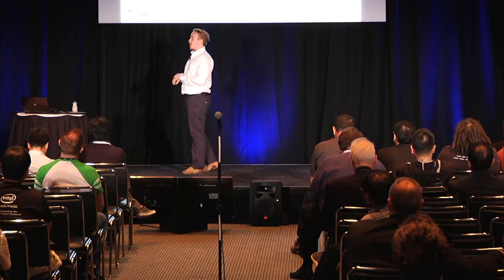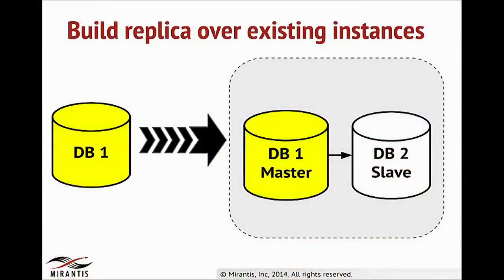The first use case defined by the community is that users should be able to build replication sets among already provisioned instances. As you can see, here we have an already provisioned instance one, and after asking Trove to build a new replication set, we will receive a spun-up container with instances connected via master-slave replication. Each slave in the replication set is always a new instance.